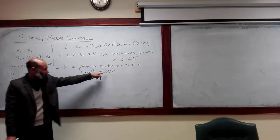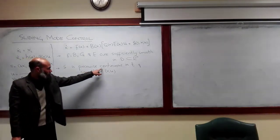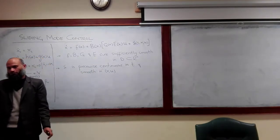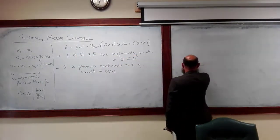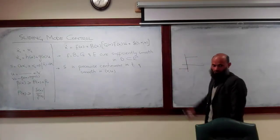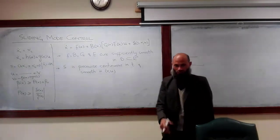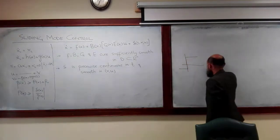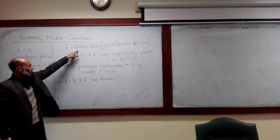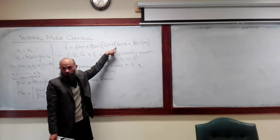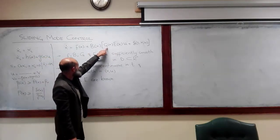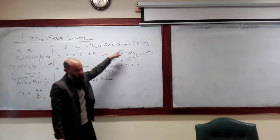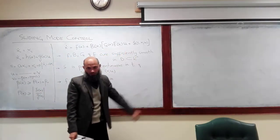A piecewise continuous function is one that has a discontinuity at some point but is otherwise continuous. Another assumption is that the functions b and e are known to us, while g of x can be uncertain, and delta is also uncertain. The known functions allow us to separate the certain and uncertain parts of the system.